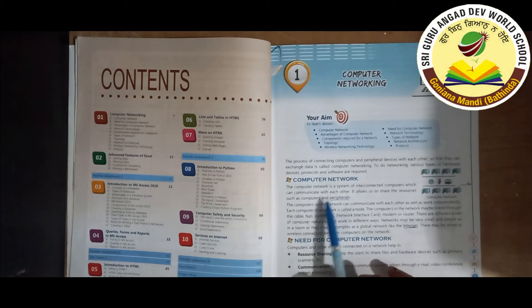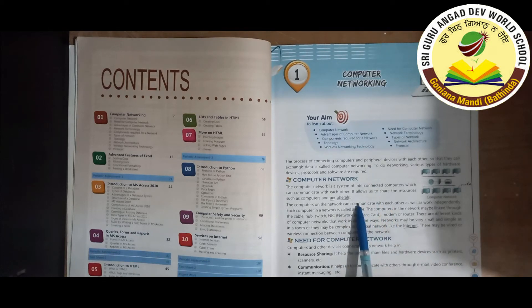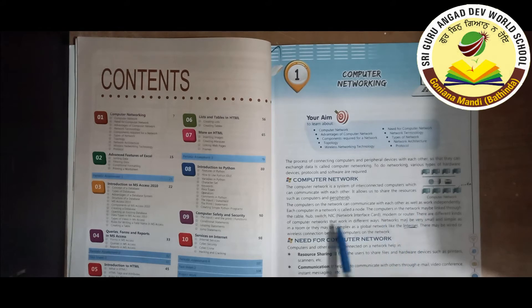A computer network is a system of interconnected computers which can communicate with each other. It allows us to share resources such as computers and peripherals. The computers on the network can communicate with each other as well as work independently.